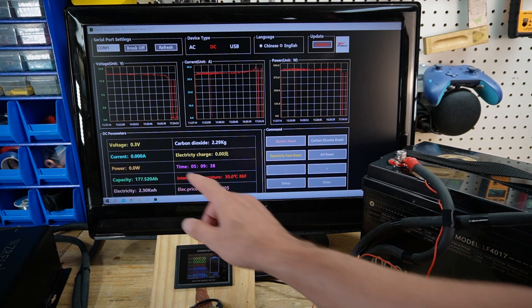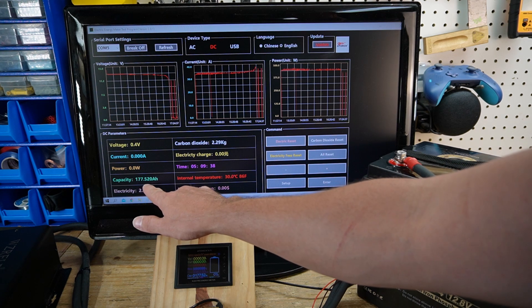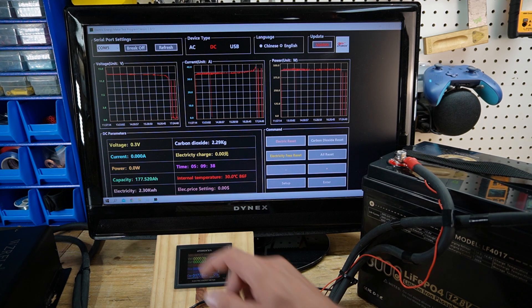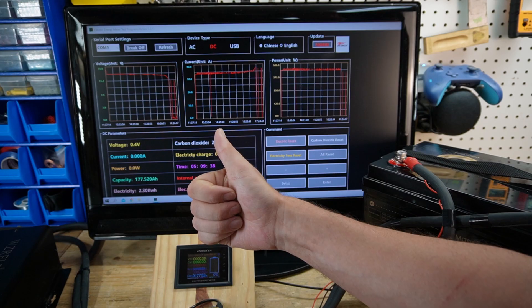The test is complete, and we have a capacity of 177.52 amp-hours, which is 7.52 amp-hours above the rated capacity of this battery. So this test is a pass.